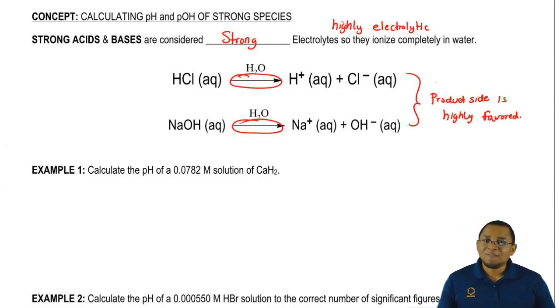Just realize, if we have a strong acid or a strong base, I've said it before, we don't have to use an ice chart in order to find pH or pOH. If you have a strong acid, take the negative log to find pH. If you have a strong base, take the negative log to find pOH.